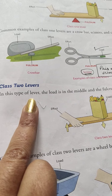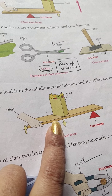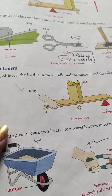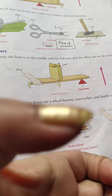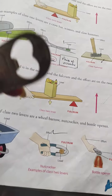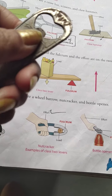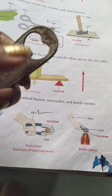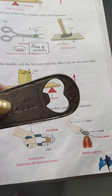In class two levers, the load is in the middle — in the central position — while the fulcrum and effort are at either ends. Examples of class two levers are the wheelbarrow, nutcracker — which helps us crack nuts like walnuts very easily — and a bottle opener. In the bottle opener, this point is the fulcrum that helps open the bottle cap; this is the effort, and this is the load in the middle. So load is in the middle, and fulcrum and effort are at either ends.